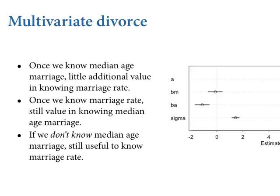Once we know median age of marriage, there's little additional value in knowing marriage rate. There might be some — it's uncertain. Once we know marriage rate, there's still value in knowing median age of marriage. If you don't know the median age of marriage, there's definitely value in knowing the marriage rate because it's correlated with the median age of marriage. That's how this spurious association arises.